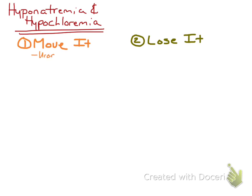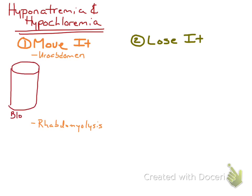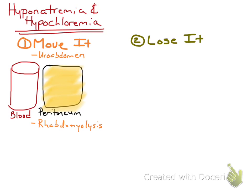So first, moving it. You could either have this with uroabdomen or rhabdomyolysis. Starting with uroabdomen — I'm going to draw here a blood vessel and the peritoneal cavity, represented by a black box. With uroabdomen, there's essentially leakage of urine into the peritoneum, so now the peritoneum contains lots of fluid.